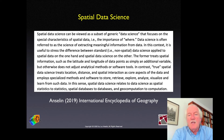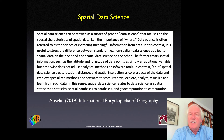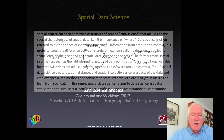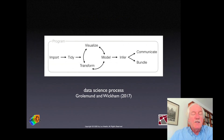Spatial data science relates to data science as spatial statistics relates to statistics, spatial databases to databases, and geocomputation to computation. This is an important distinction many people miss — they think that just because you use latitude and longitude in a machine learning algorithm that makes it spatial analysis, but it does not. Using the relative positioning, distance, and interaction as part of the methodology is what makes it spatial data science.